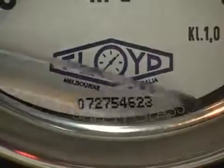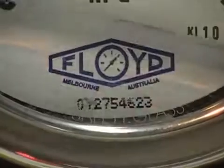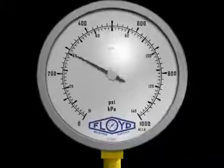In this situation, a glycerine filled gauge will extend its life, and or the use of a snubber will restrict the flow into the gauge.